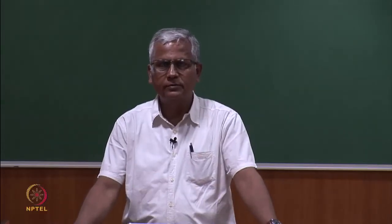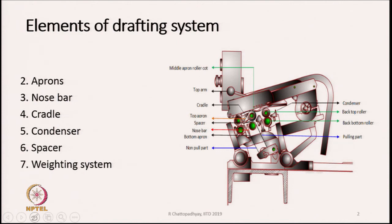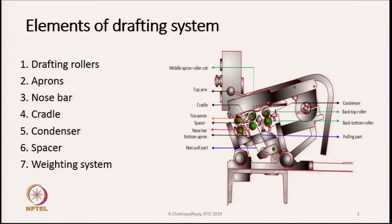We are going to discuss the drafting system of a roving frame. The elements of a drafting system or drafting unit are shown in a diagram on the right-hand side. The main components of the drafting unit are: drafting rollers, aprons, nose bar, cradle, condensers, spacer, and a weighting system or weighting mechanism.